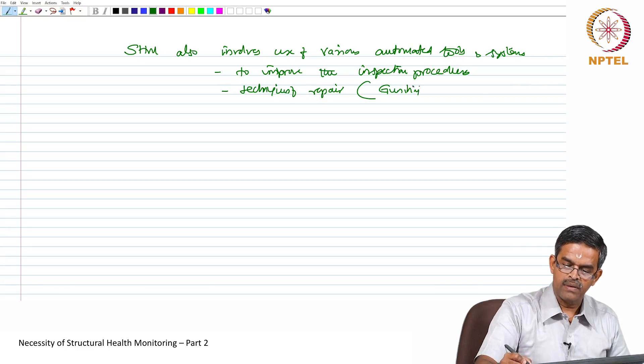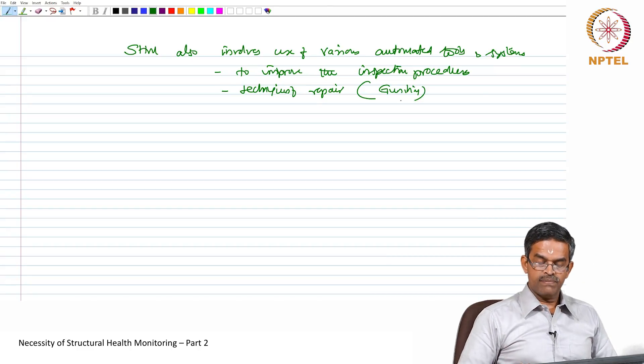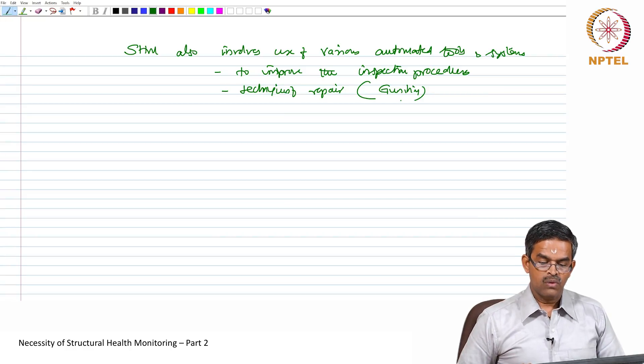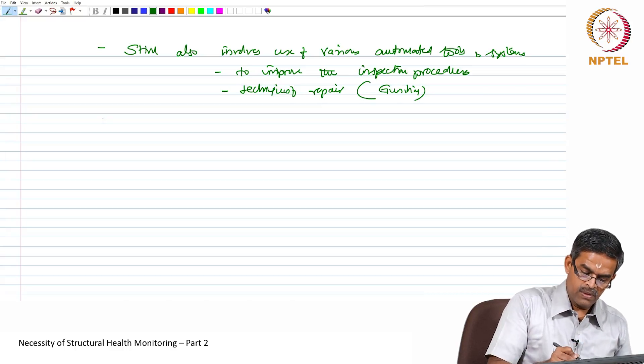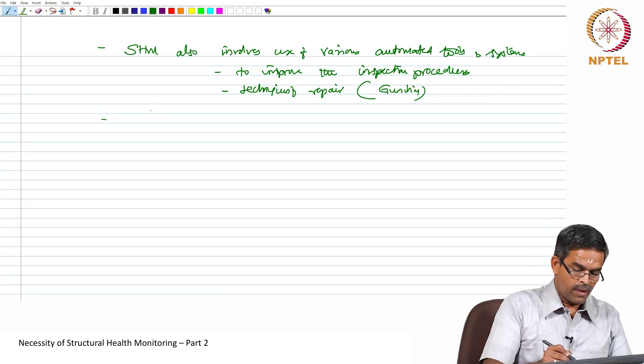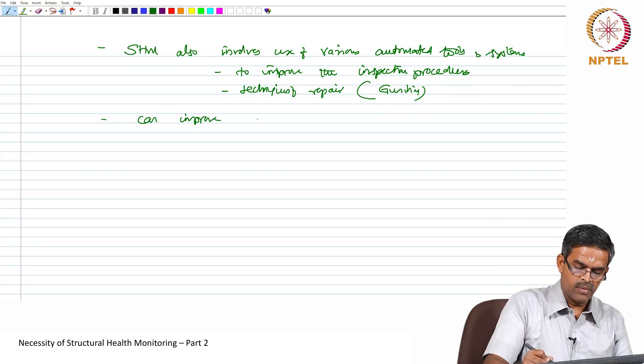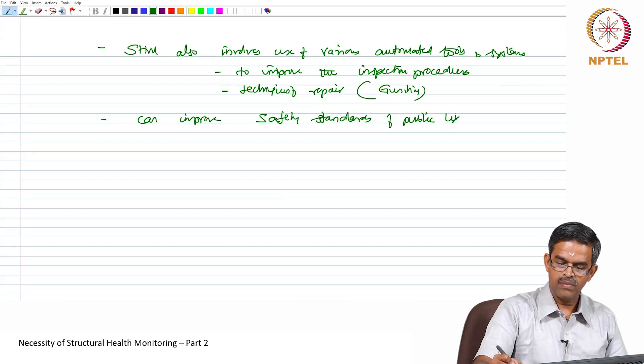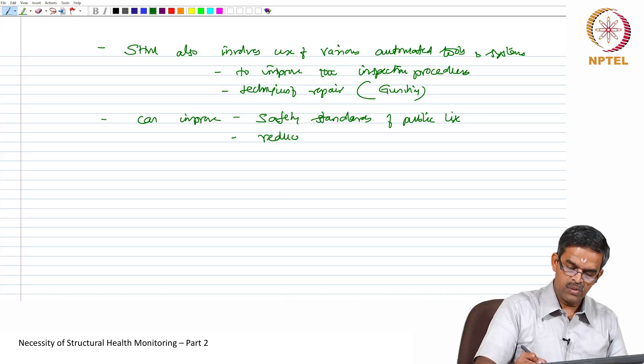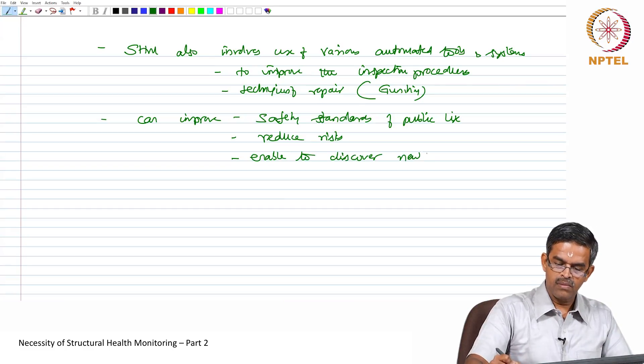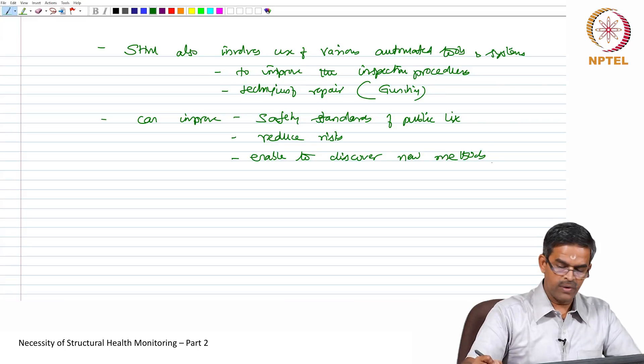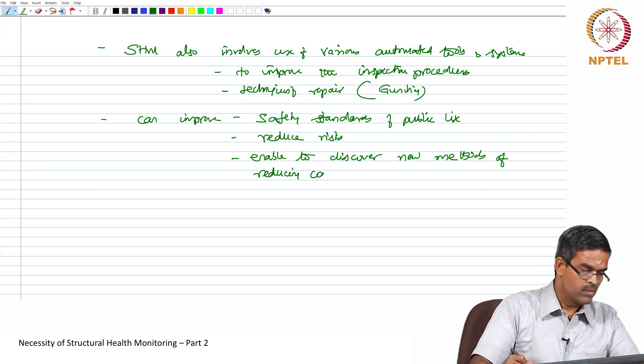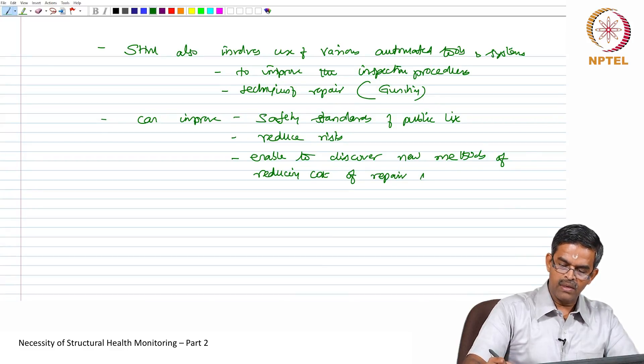For example, granite can be one such novel method of repairing which can improve or which can have a surface treatment of material degradation against corrosion. Therefore, a scientific approach of SHM can improve safety standards of public life, it can reduce risks, and it can enable to discover new methods of reducing cost of repair and rehabilitation.